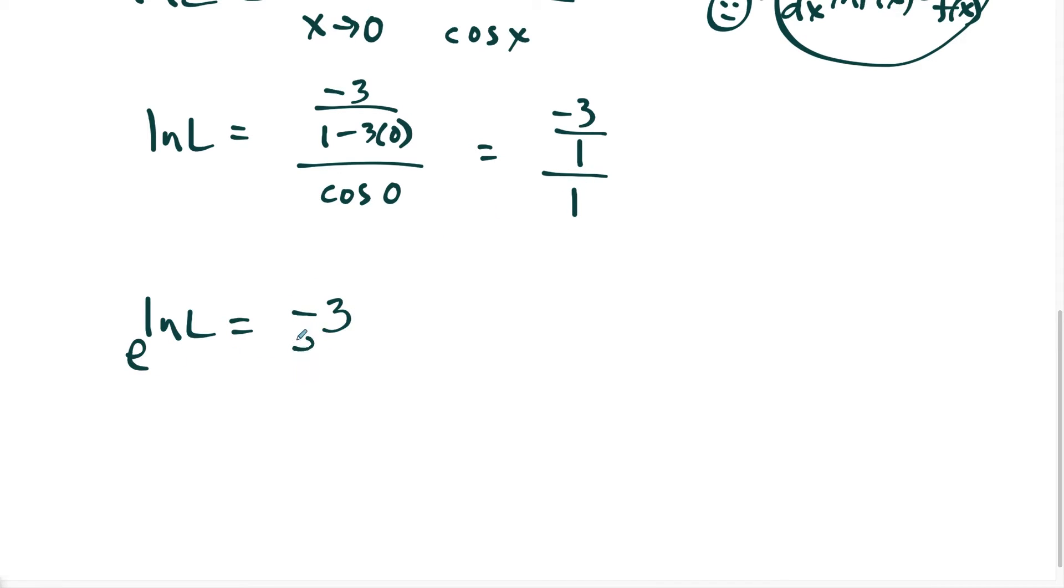And if we exponentiate both sides, e to the natural log L, e and natural log cancel, the limit is equal to e to the negative third power, or it's equal to one over e to the third.